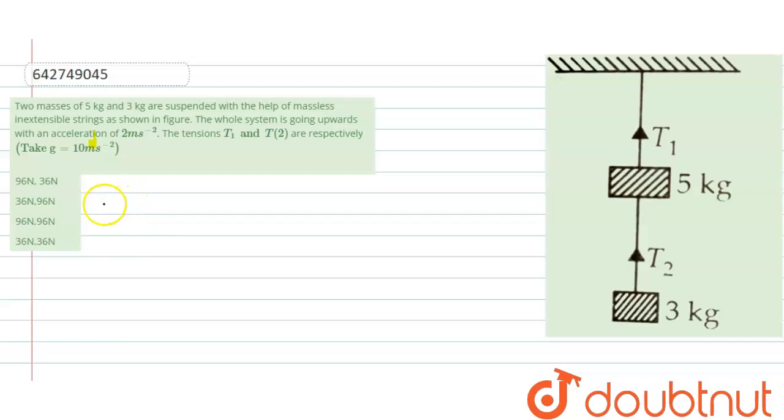m1 is 5 kg and m2 is 3 kg, right, and take g is equal to 10 meter per second squared.